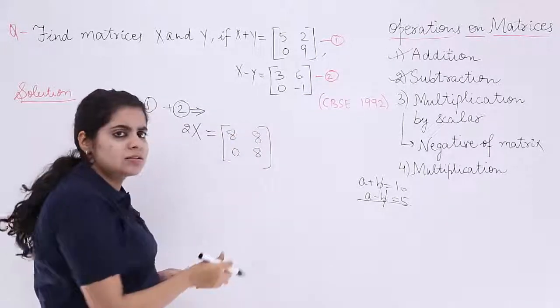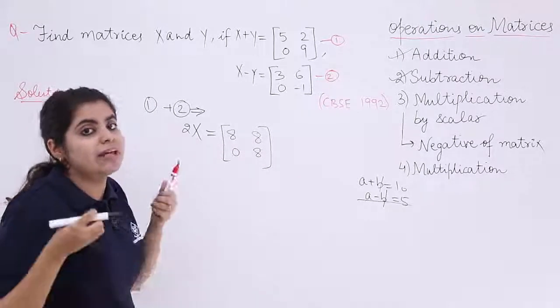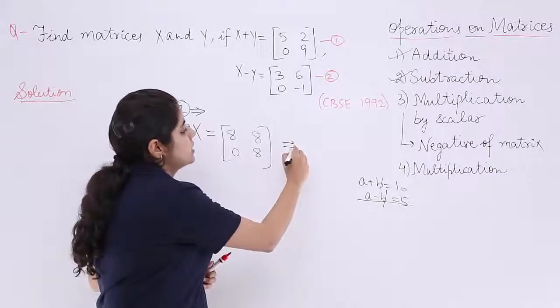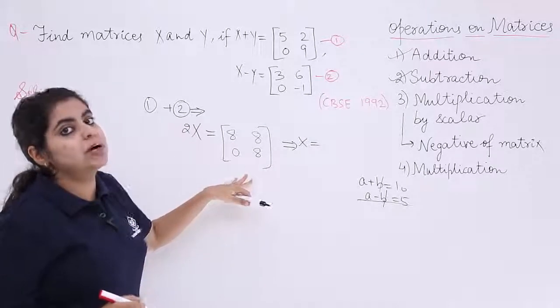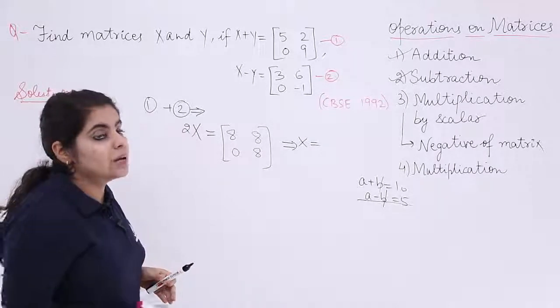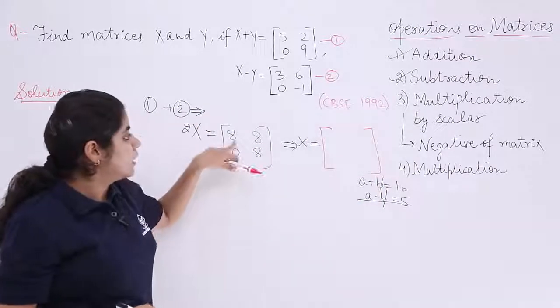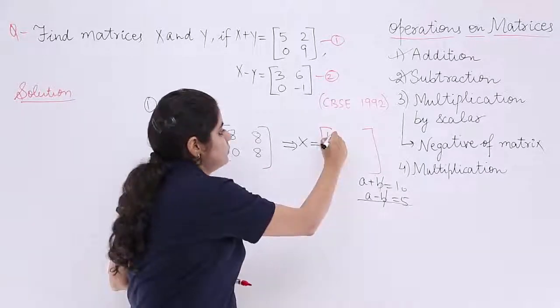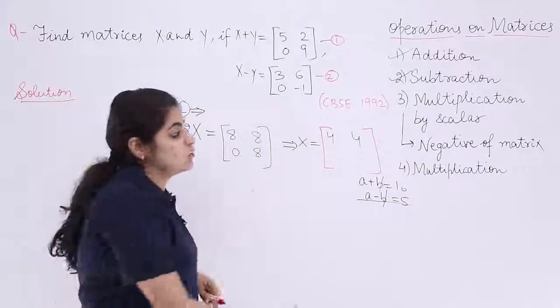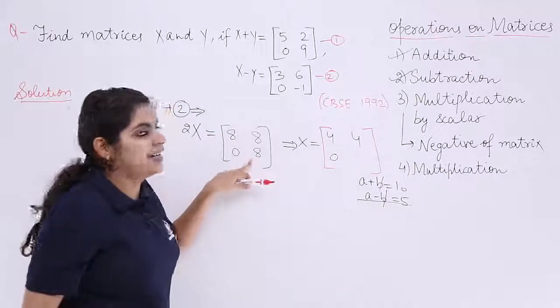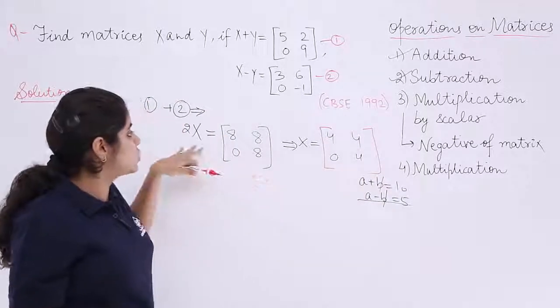But this is what? This is 2X and what am I supposed to find? Am I supposed to find X? So what is my value of X? Basically X is obtained when this 2 which is multiplied becomes divide. So it becomes divide and hence I have the answer to this question. Let's see. Divide by 2, it is 4. Divide by 2, it is again 4. 0 divide by 2 is 0, and 8 divide by 2 is 4. So this is the answer to the matrix X.